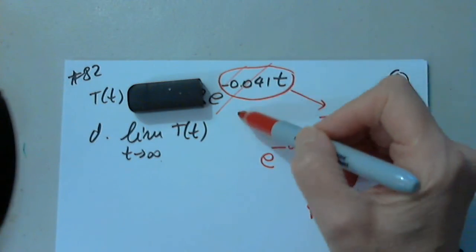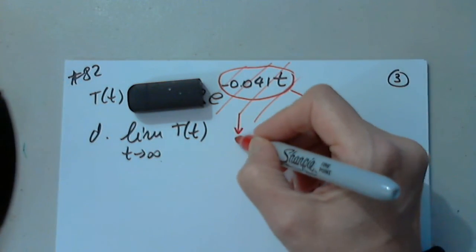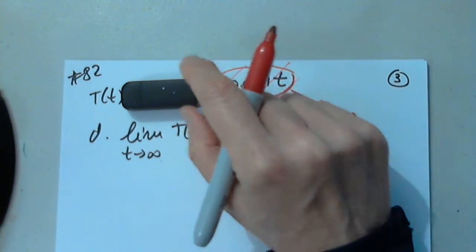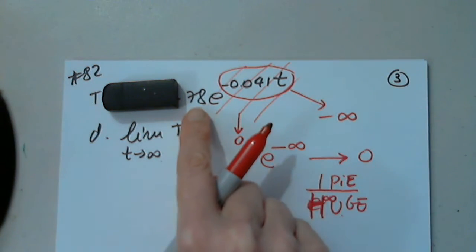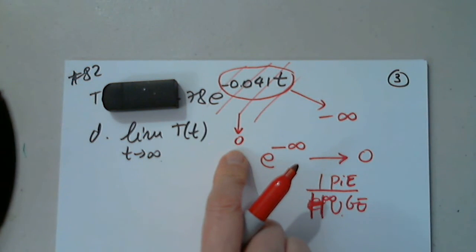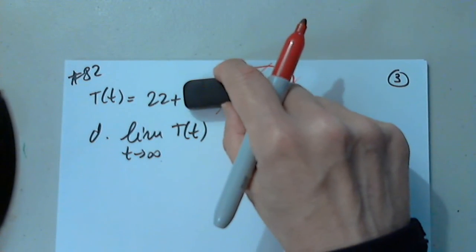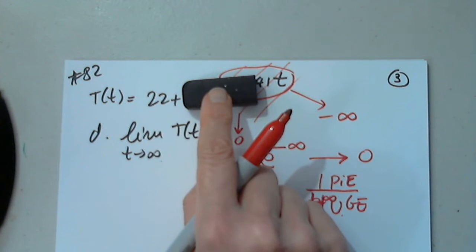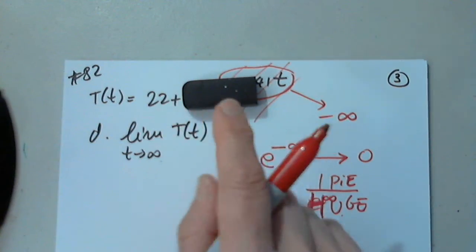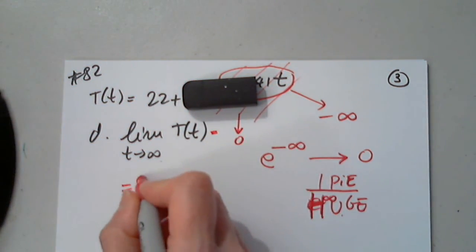Absolutely nothing. So then I know that this piece approaches zero. Let's uncover the rest. How much is 78 times zero? Zero. How much is 22 plus zero? 22. Excellent. So then this limit is 22.